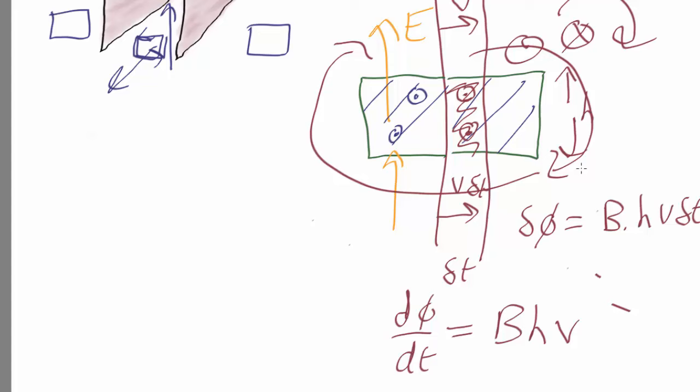Do we actually have such an electric field? Well, what's the line integral around here? The line integral at the bottom is zero because the electric field is at right angles to the length element. Similarly, at the top. On the outside side, the line integral is zero because there's no electric field. So the only part of the loop where there's a non-zero line integral is this bit over here.